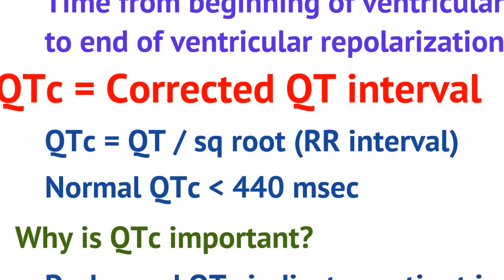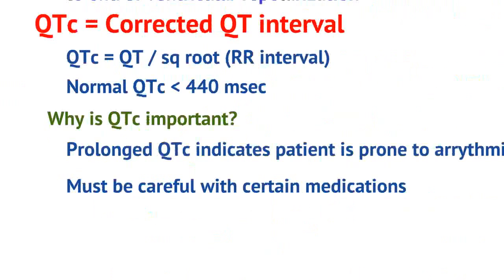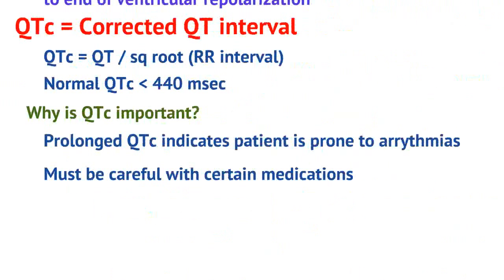A normal QTc is less than 440 ms. The QTc lets us determine if a patient is at higher risk for arrhythmias. A prolonged QTc indicates that a patient is prone to arrhythmias, including fatal arrhythmias.